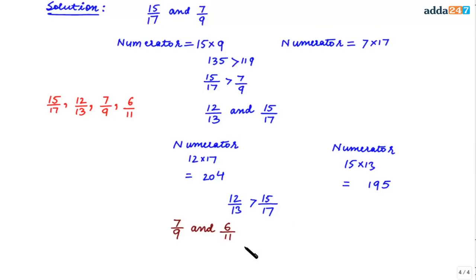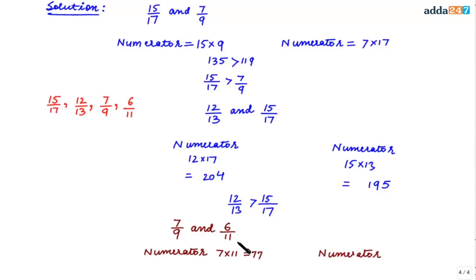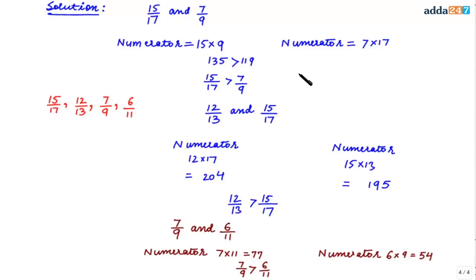Let's compare 7/9 and 6/11. Making the denominators the same: the numerator for 7/9 becomes 7 × 11 = 77, and for 6/11 it becomes 6 × 9 = 54. Since 77 is greater than 54, that means 7/9 is greater than 6/11. These were our three comparison results, and based on them we can arrange the fractions in descending order.